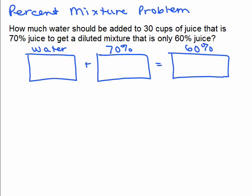So in other words, we're trying to dilute the juice by adding water to it. So we're going to have a bigger container of juice, but the amount of pure juice in there is going to be only 60%.